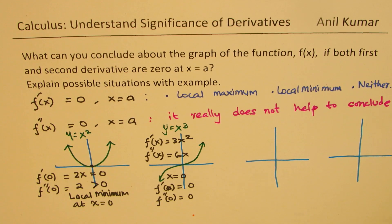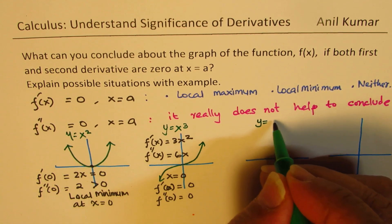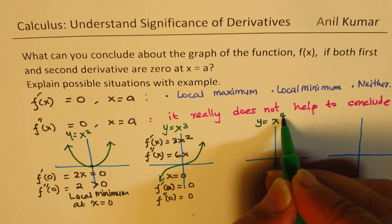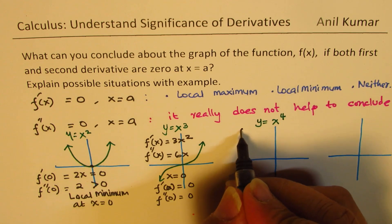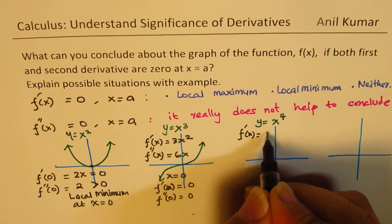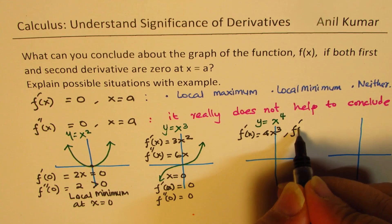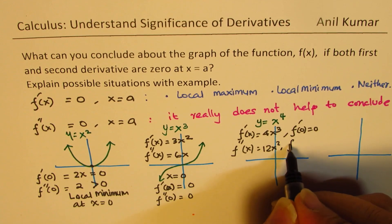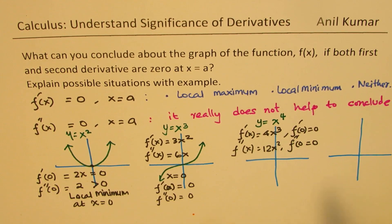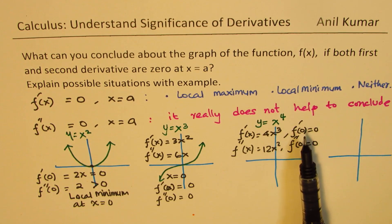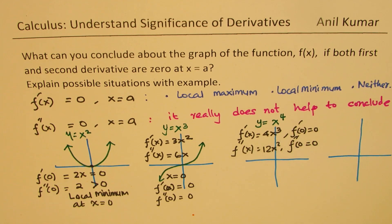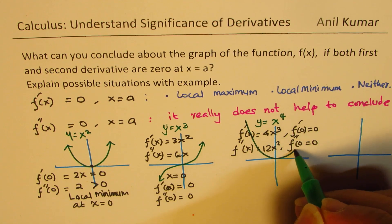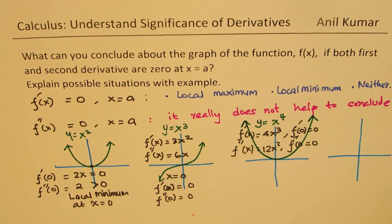Similarly, consider y equals x to the power of 4. The first derivative is 4x cubed, so f'(0) equals 0. The second derivative is 12x squared, which is also 0 at x equals 0. Since both are 0, we cannot say whether we have a local maximum, local minimum, or neither. If you graph this function, you do get a local minimum — however, we cannot confirm it from the derivatives alone.